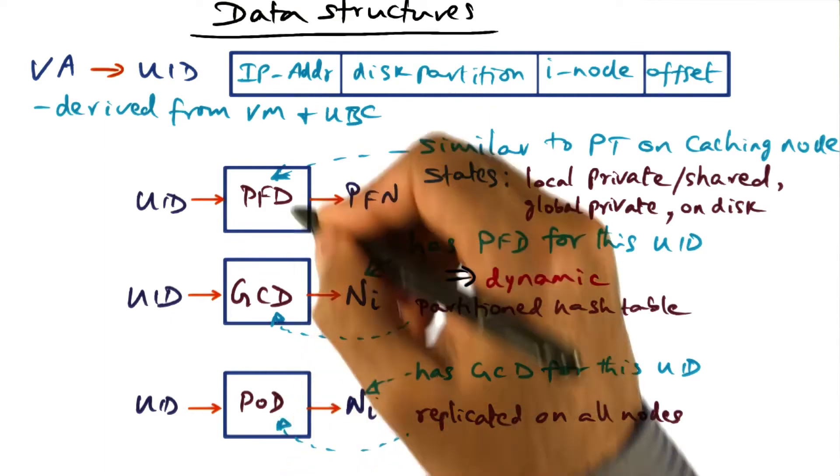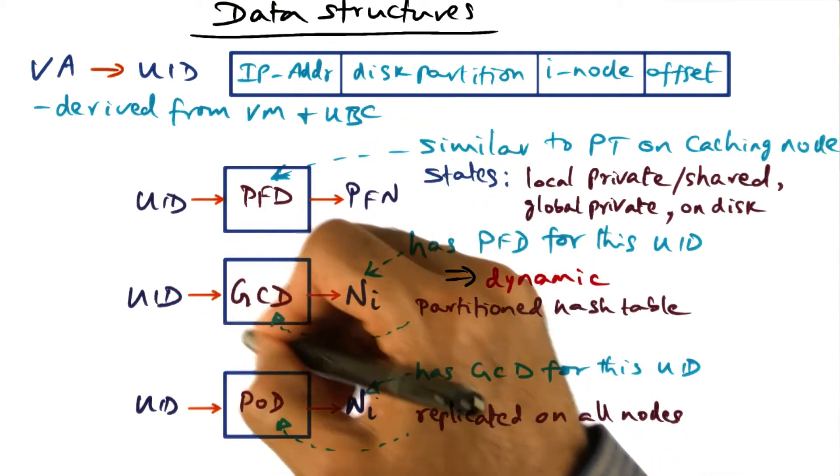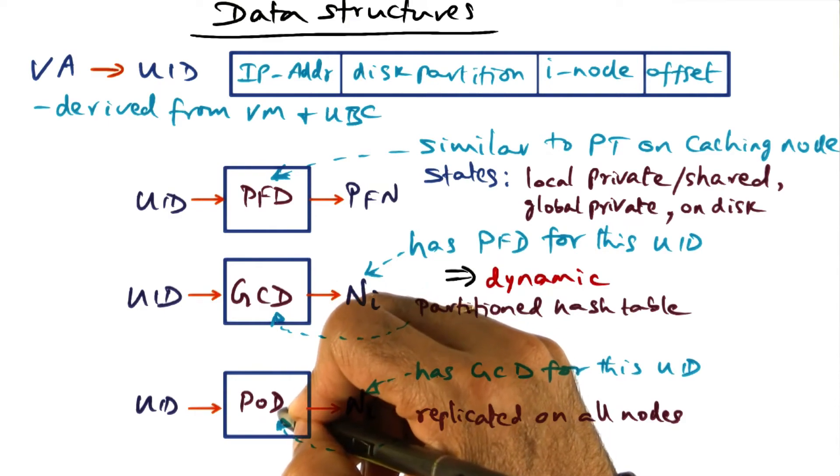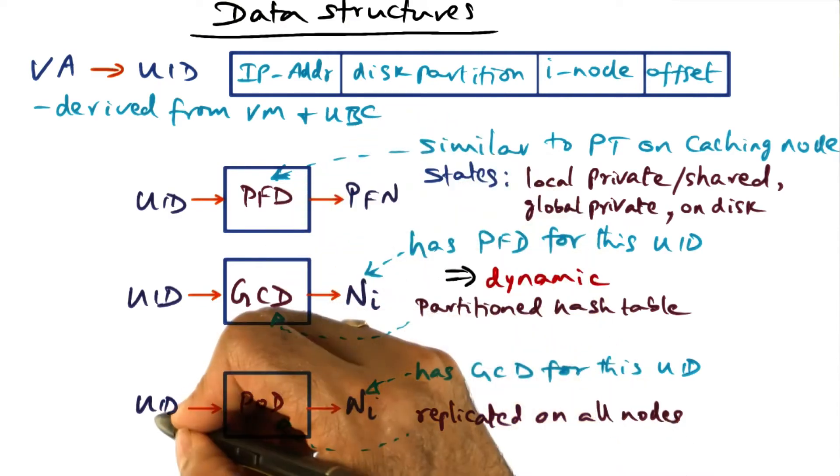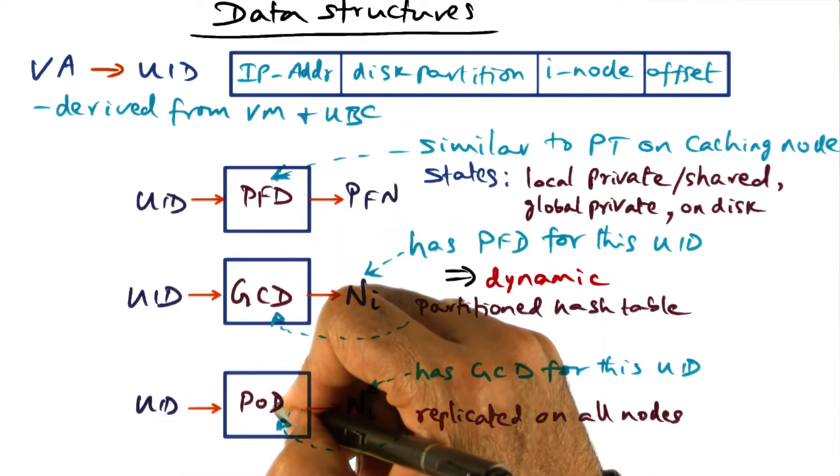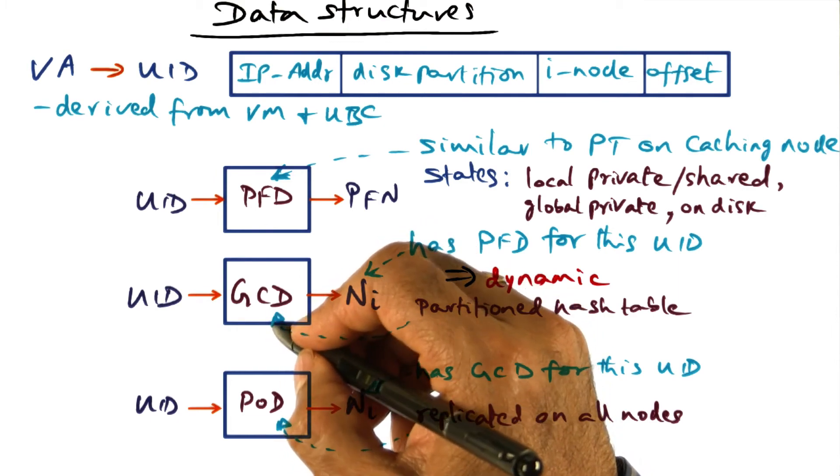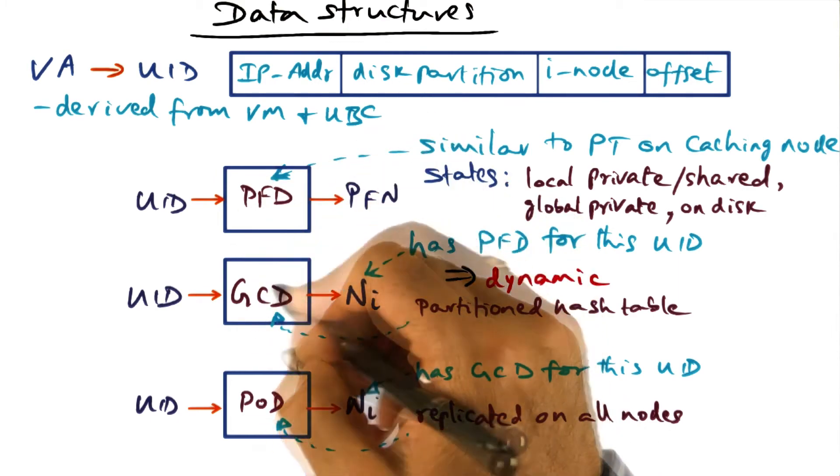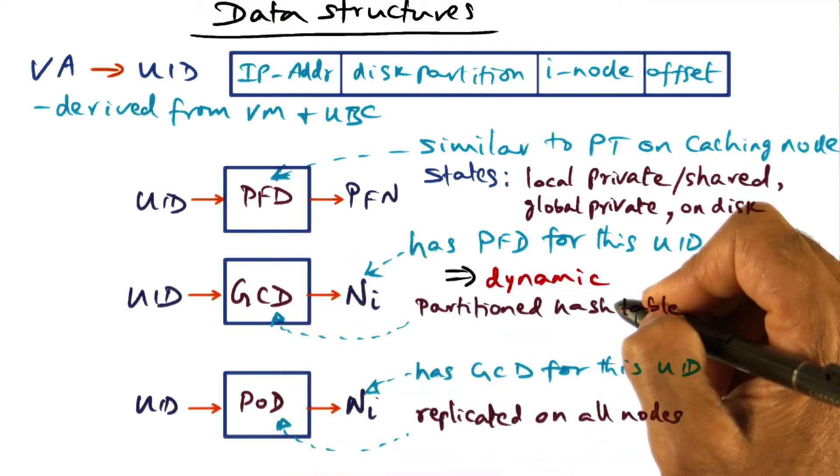Remember that we could have simply gone from here to here, but that would have been a static mapping. And this one level of indirection is giving a way by which we don't have to statically map a PFD to a UID, but this intermediate step allows us to move the responsibility of hosting a particular PFD to different nodes using this intermediary, which is a distributed hash table.